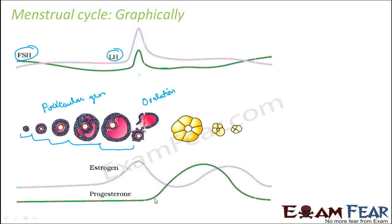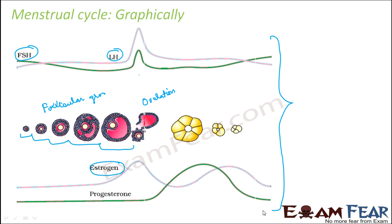As soon as corpus luteum is formed, the level of progesterone increases because corpus luteum secretes progesterone, which is important for maintaining the lining of the endometrium. Before the formation of corpus luteum, progesterone was low — there was no progesterone being secreted. And again, if there is no fertilization, the corpus luteum will degenerate, and therefore the progesterone level will also decrease. If you look at the estrogen level, it increases with the increase in LH and FSH, then comes down, and increases again later. This is how the levels of the various hormones change during the menstrual cycle.